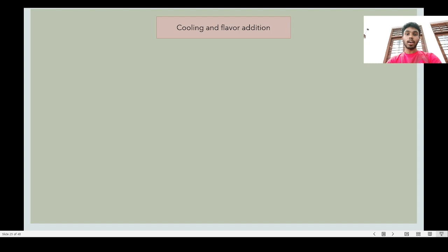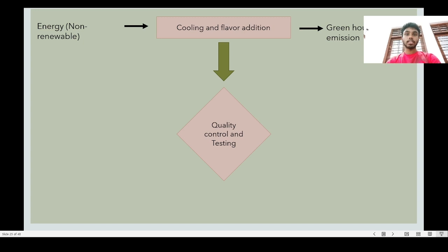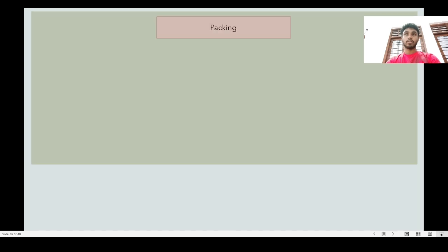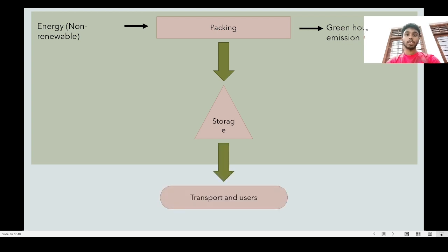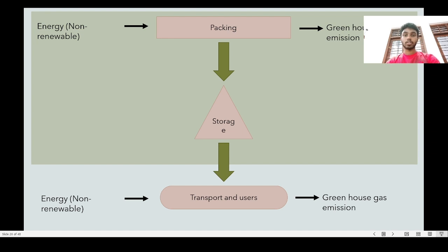Cooling and adding flavor is done after monitoring the fermentation, using non-renewable energy sources. Quality control and testing is the tenth step and also a quality inspection process, using non-renewable energy with air emissions and chemicals released as output. Finally, packing, storage, transport, and user stages are done respectively in the yogurt production process, all using non-renewable energy sources, with greenhouse gases like carbon dioxide and nitrous oxide released.